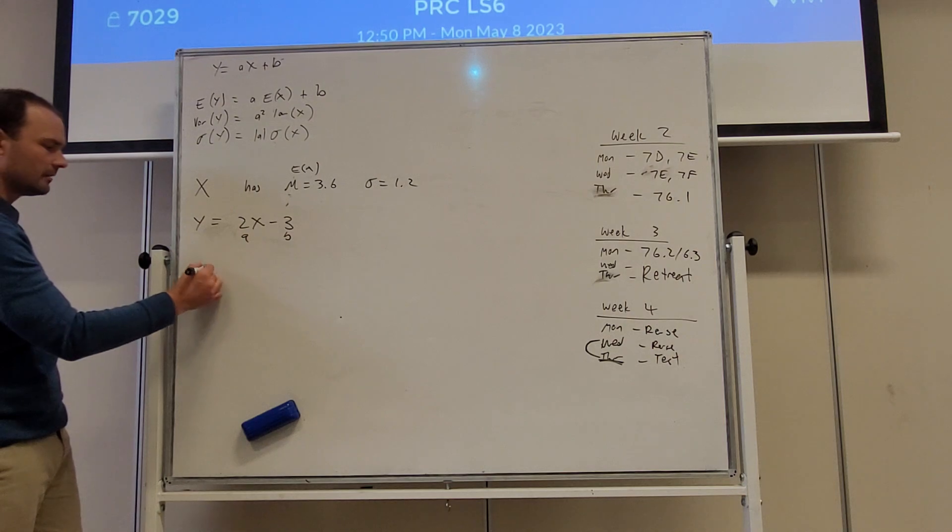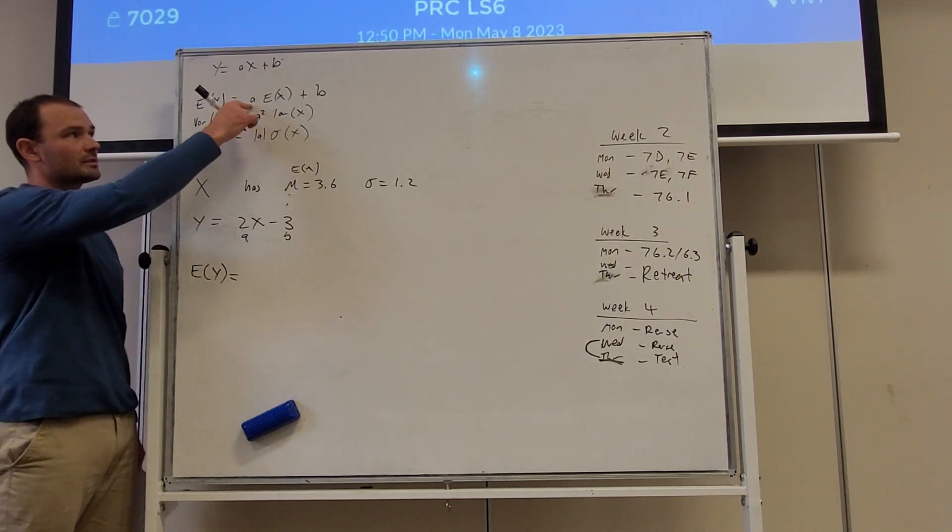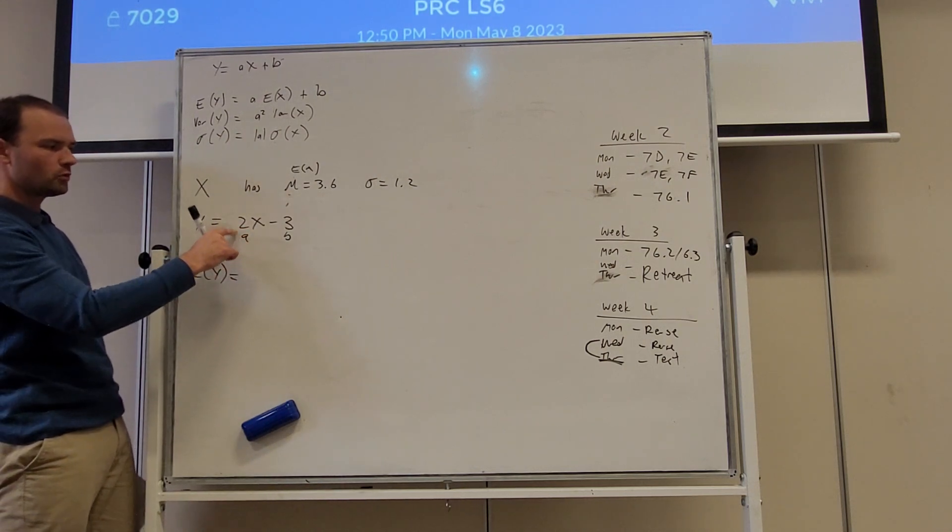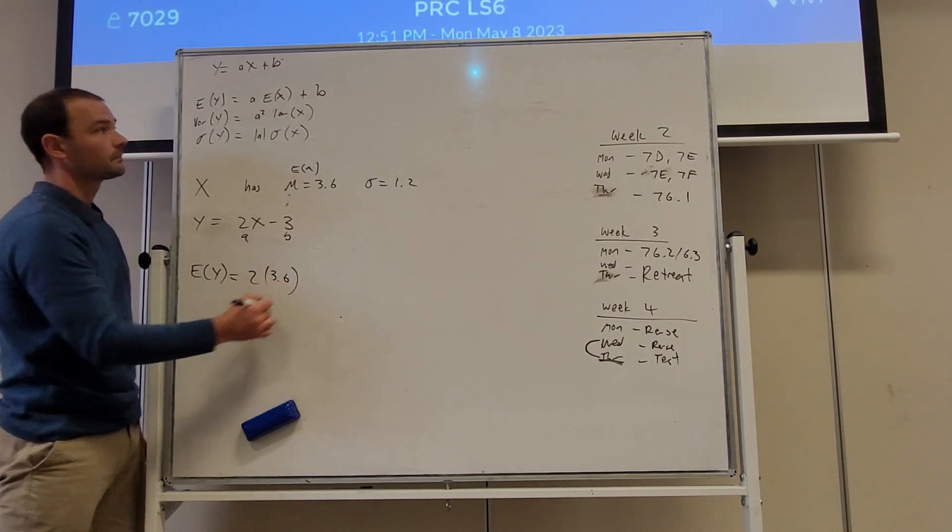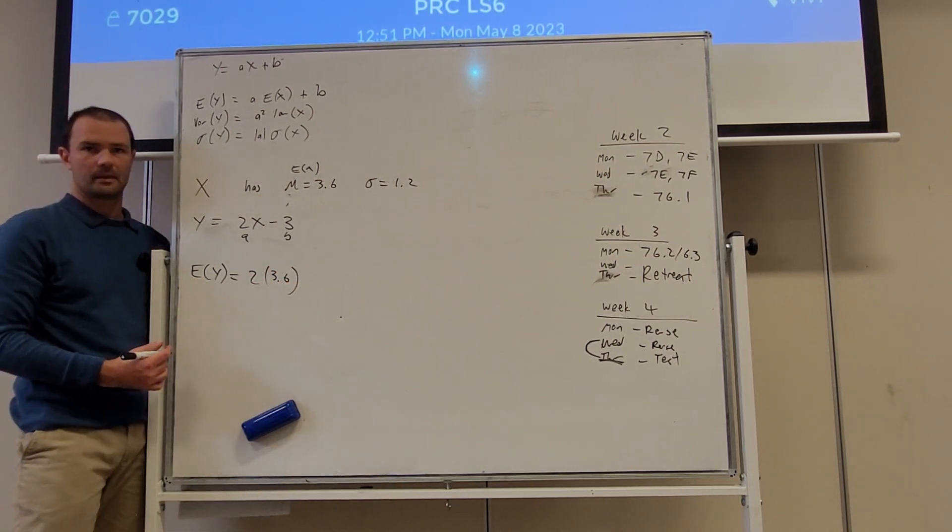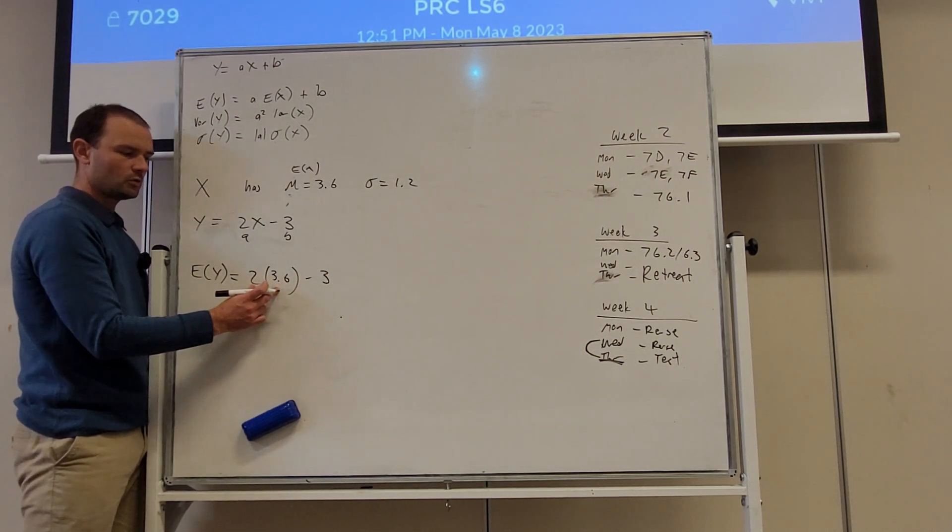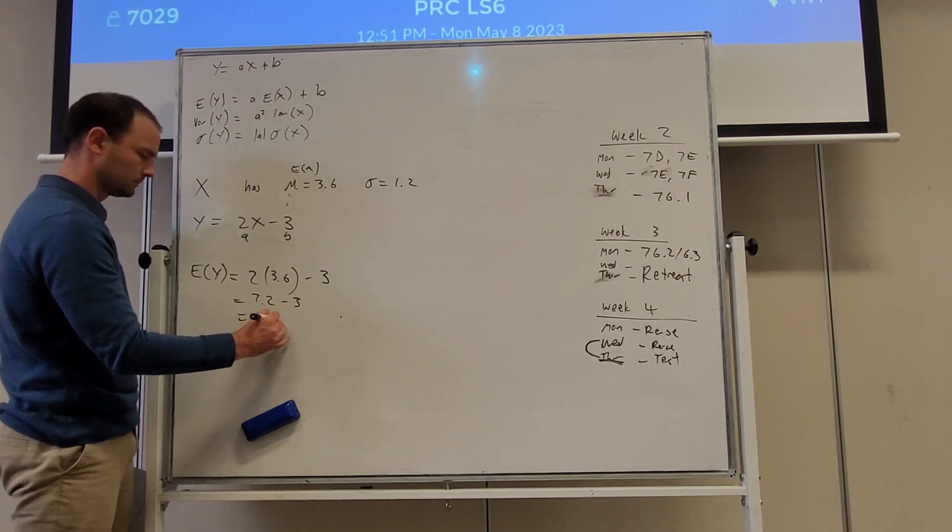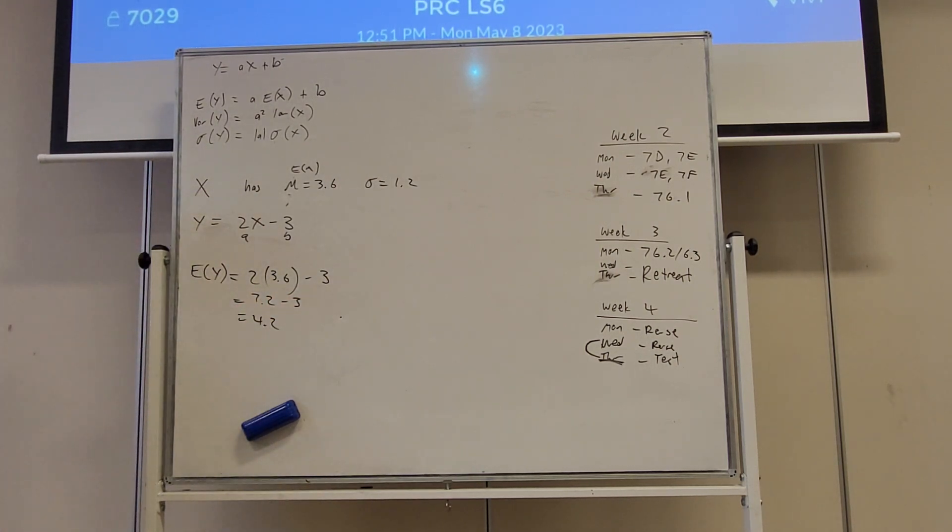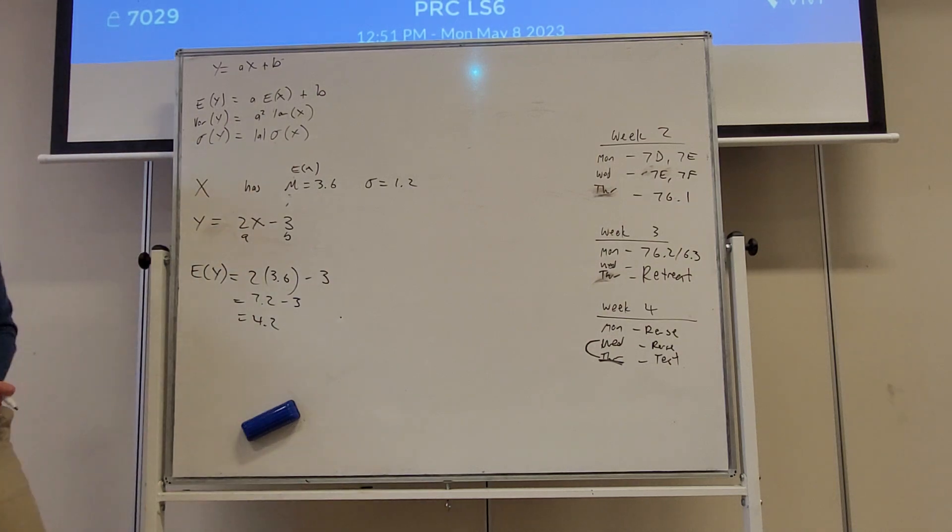So we're asked to find E(y), the expected value of y, and it's equal to a times E(x). So that means 2 times the expected value of x, 3.6, and then plus b. The value of b is minus 3. So that's going to be 7.2 take away 3, which is 4.2. So y, the random variable y is linked to x. So that's the expected value of 4.2.